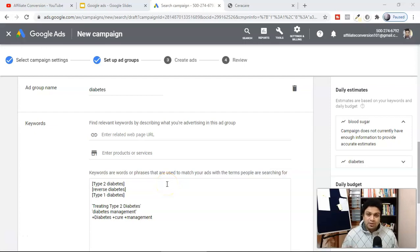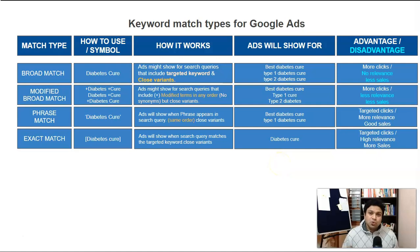If you're promoting affiliate offers like ClickBank offers with Google Ads, this is the video you have to watch. Watching this video will help you get more conversions with your Google Ads search campaigns. One of the key things with Google Ads is keywords — keywords will show your ads to the right audience. If you don't know how to pick the right keyword, you won't get any conversions.